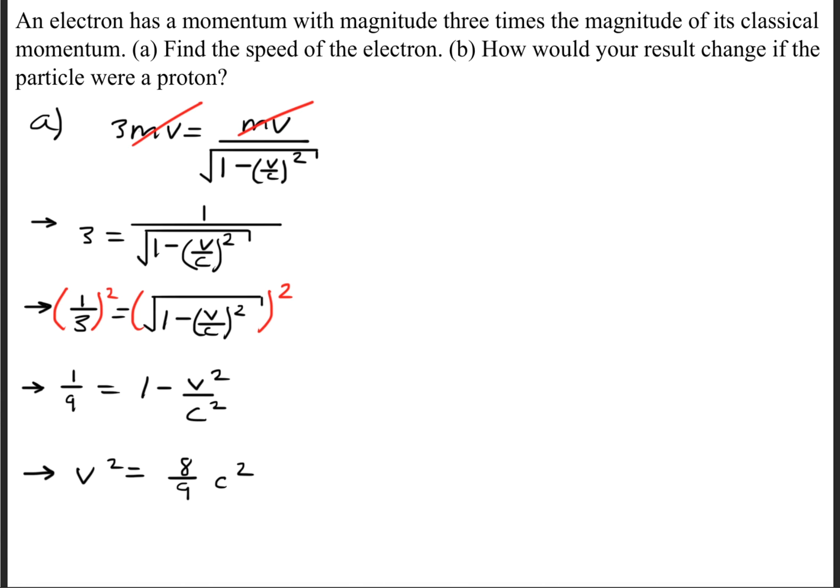Now we're going to isolate the velocity term so that we get v squared is equal to 8 over 9 times c squared.